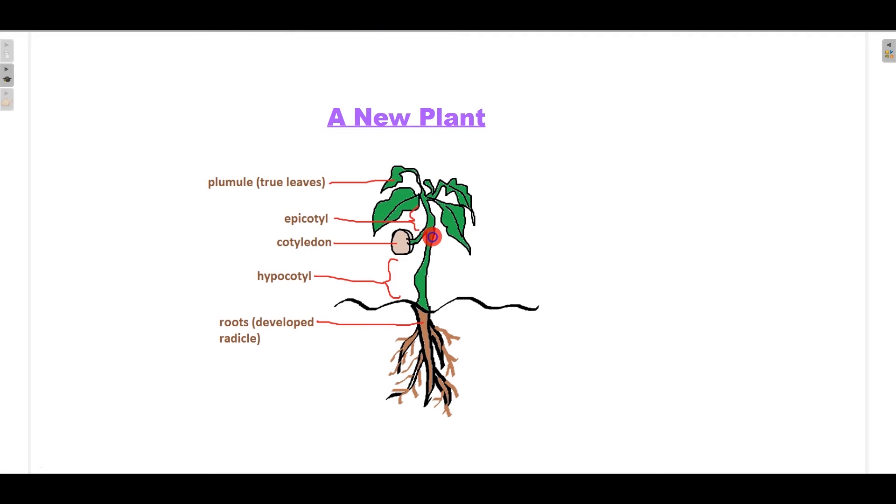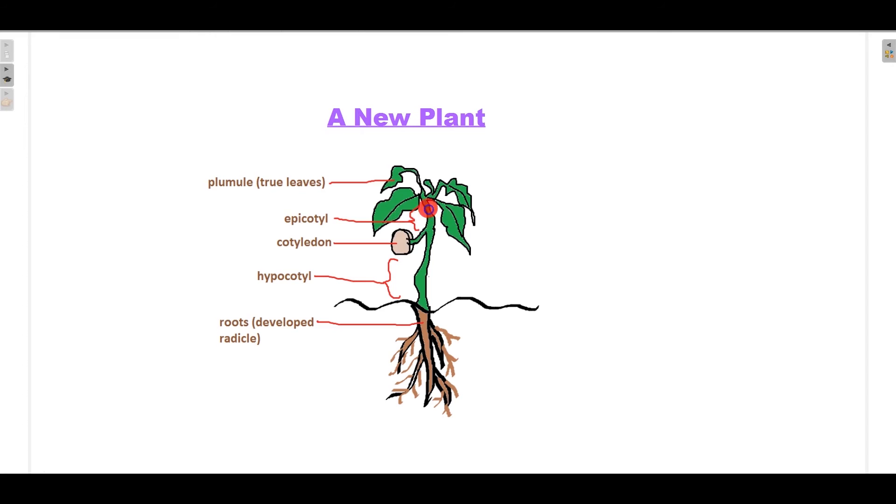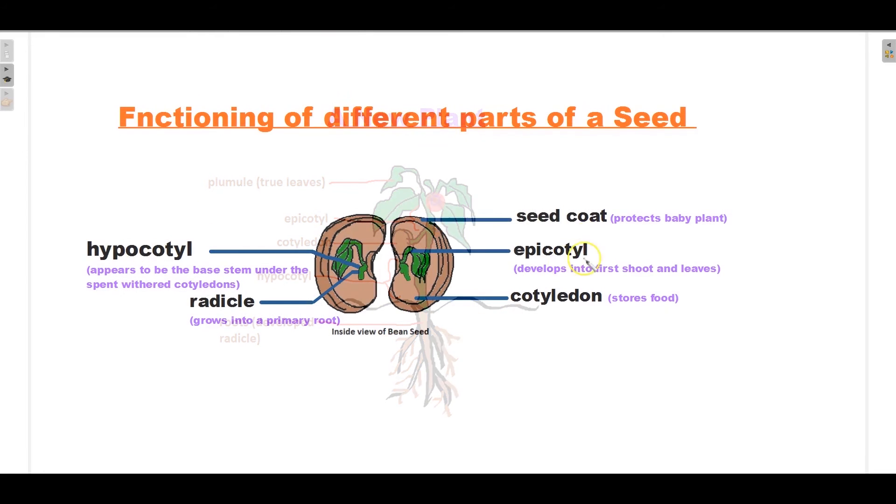Epicotyl develops into the first shoot and leaves. Seed coat protects the baby plant.